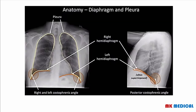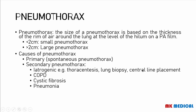Here are the costophrenic angles — they are supposed to be acute and should be present. You also have the posterior costophrenic angle that you should check for. Sometimes there may be obliteration of this angle, for example if there's fluid accumulating within the space. You can see the right diaphragm, which is much higher due to the presence of the liver, and the left diaphragm, which is lower.